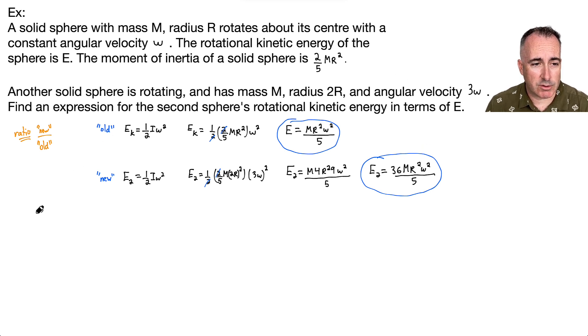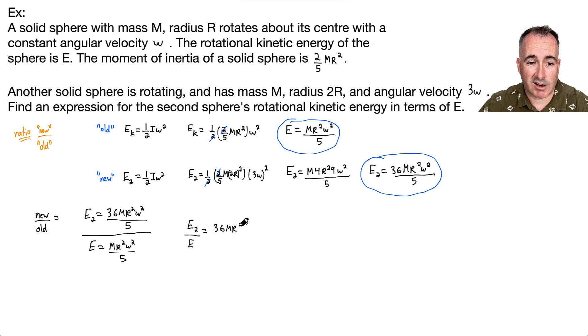In case you weren't sure, let me show you all the steps. New over old. E2 equals 36M R squared omega squared over 5, and that whole equation divided by the original one, E equals M R squared omega squared over 5. When you divide a fraction by a fraction, you multiply by the reciprocal. So I can multiply by 5 over M R squared omega squared. Here's where all the magic will happen.